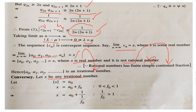Conversely, let x be an irrational number. We take the greatest integer function: ⌊x⌋ = a₀, so x = a₀ + f₀ where f₀ is the decimal (fractional) part between 0 and 1. To represent an irrational number as an infinite continued fraction, first apply the greatest integer function, separate the fractional part, and then take the reciprocal: write x = a₀ + 1/(1/f₀).